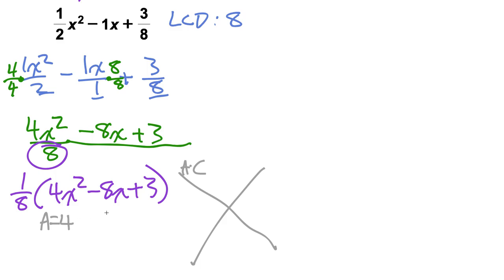What's a times c? Well, a is 4, c is 3, so a times c is 12. And then the b term, basically the middle coefficient, is negative 8.